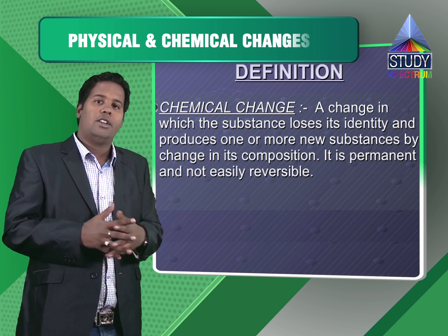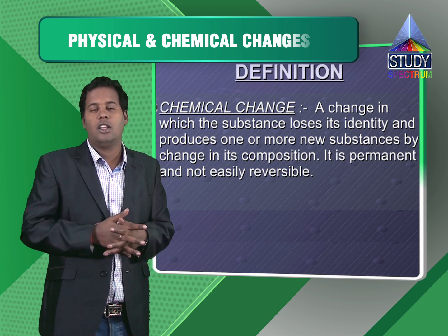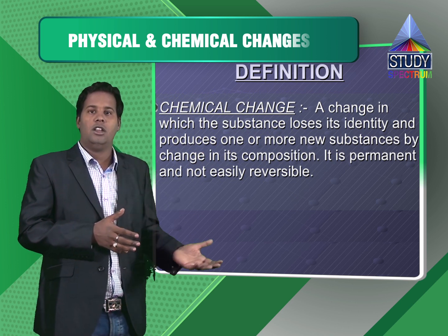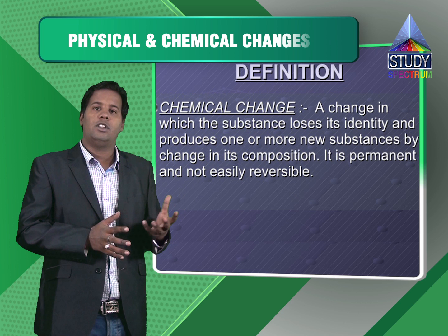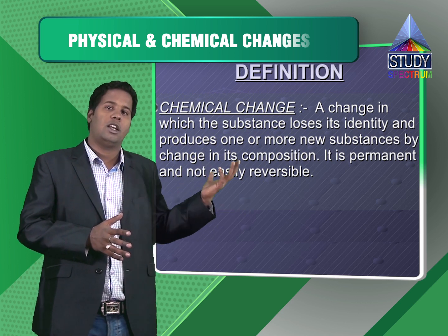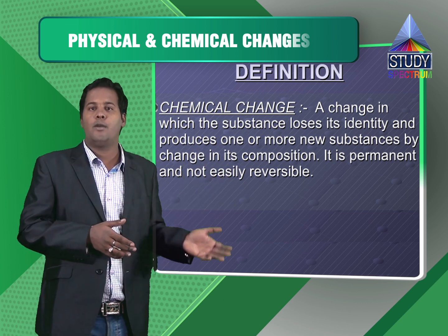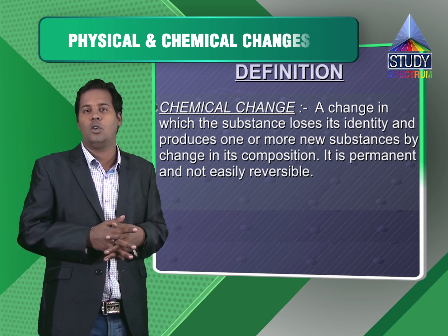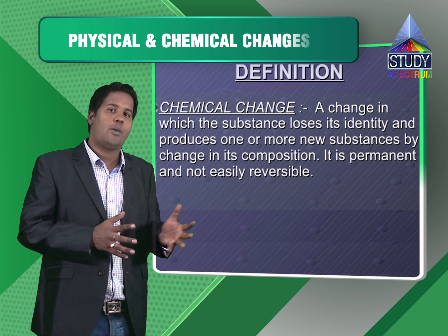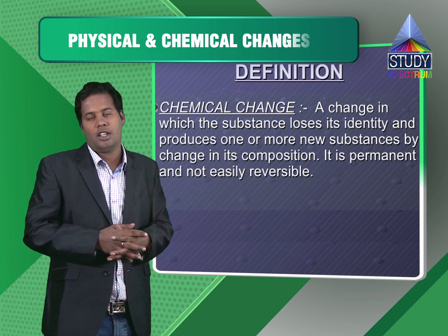What is a chemical reaction? How to check whether a chemical reaction is occurring or not? We have seen: change in colour, change in state, change in temperature, and evolution of gas. We started with change — physical change or chemical change. Then we saw different types of properties: physical properties like shape, size, and state, and chemical properties which are internal properties of a substance.